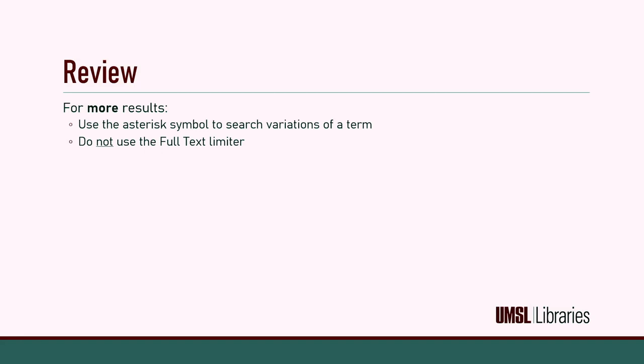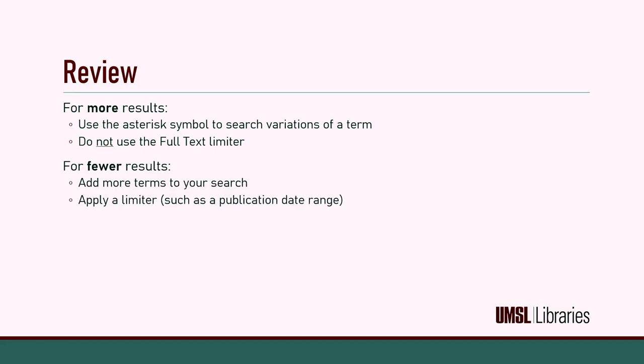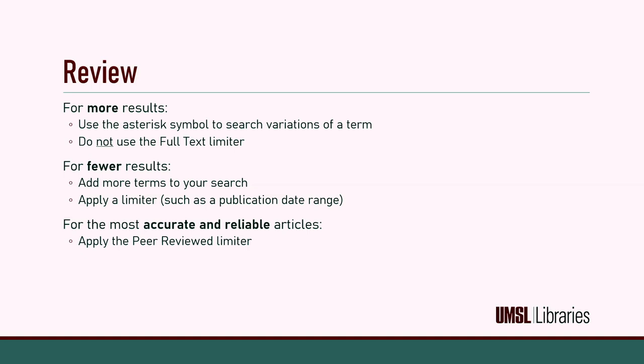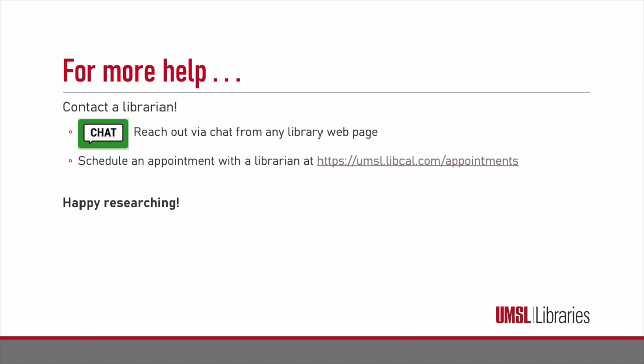Here's a quick review. To get more results, use the truncation symbol — the asterisk — and do not check the box for full text. To get fewer results, add more terms to your search or apply a limiter, such as selecting the publication date to a specific range. To get the most accurate and reliable articles, check the box for peer review. And remember, ask a librarian if you need any help. We love to answer your questions. Thanks for watching and happy researching.